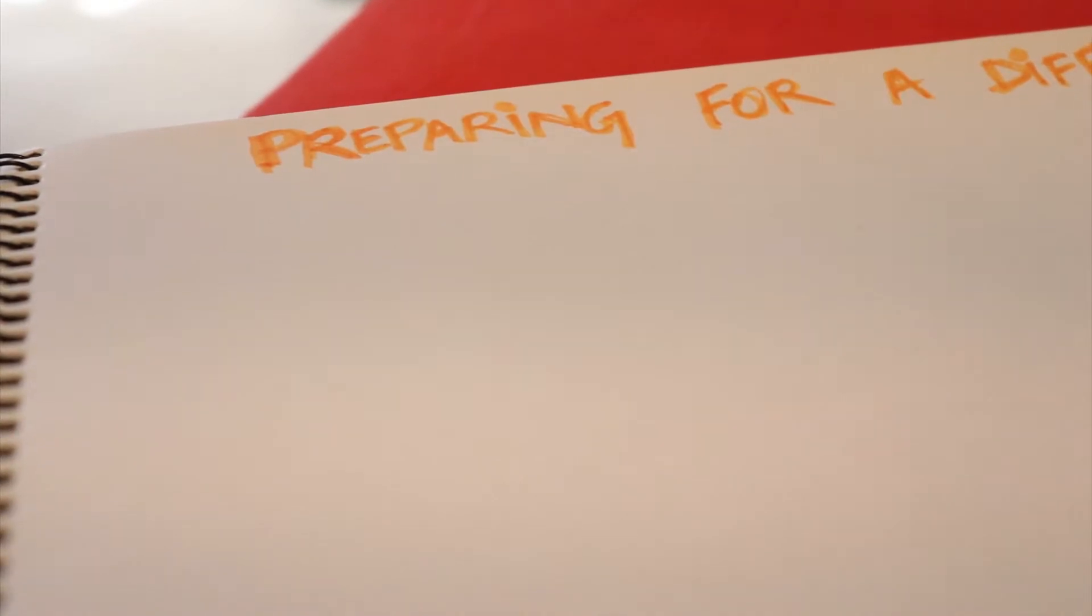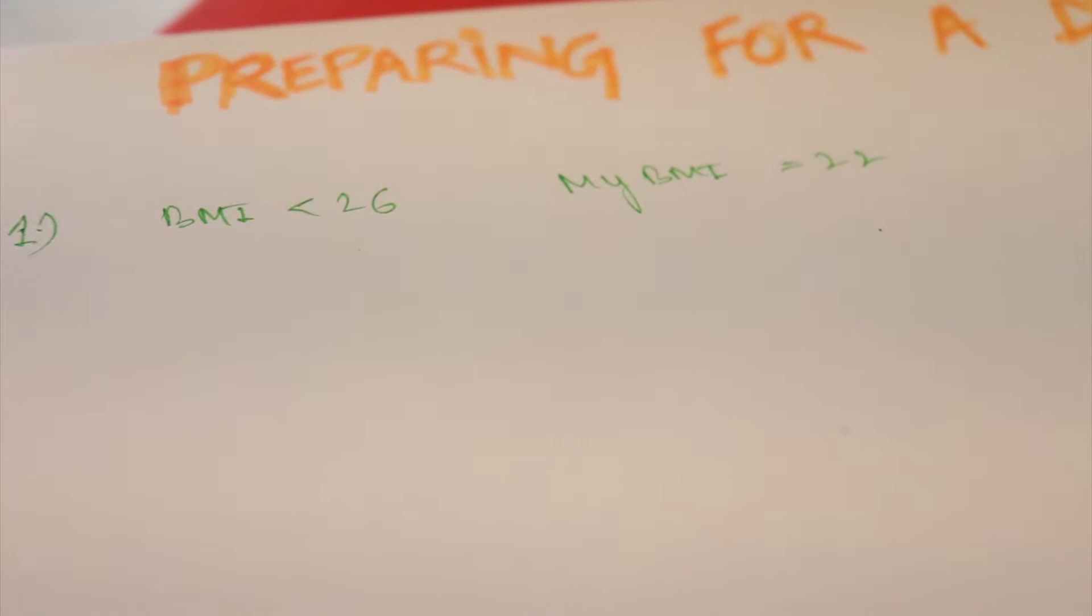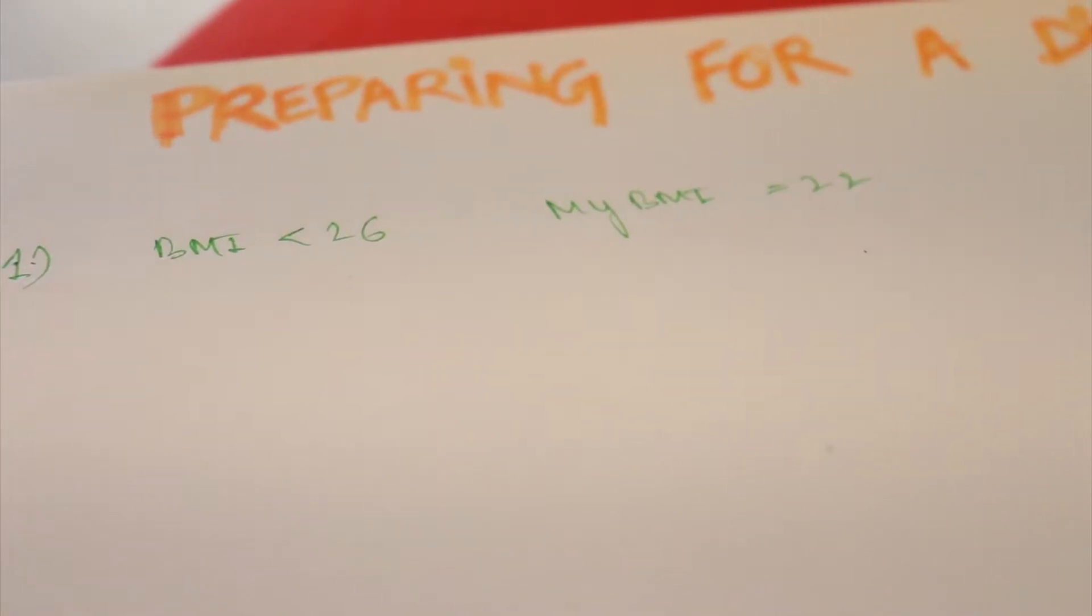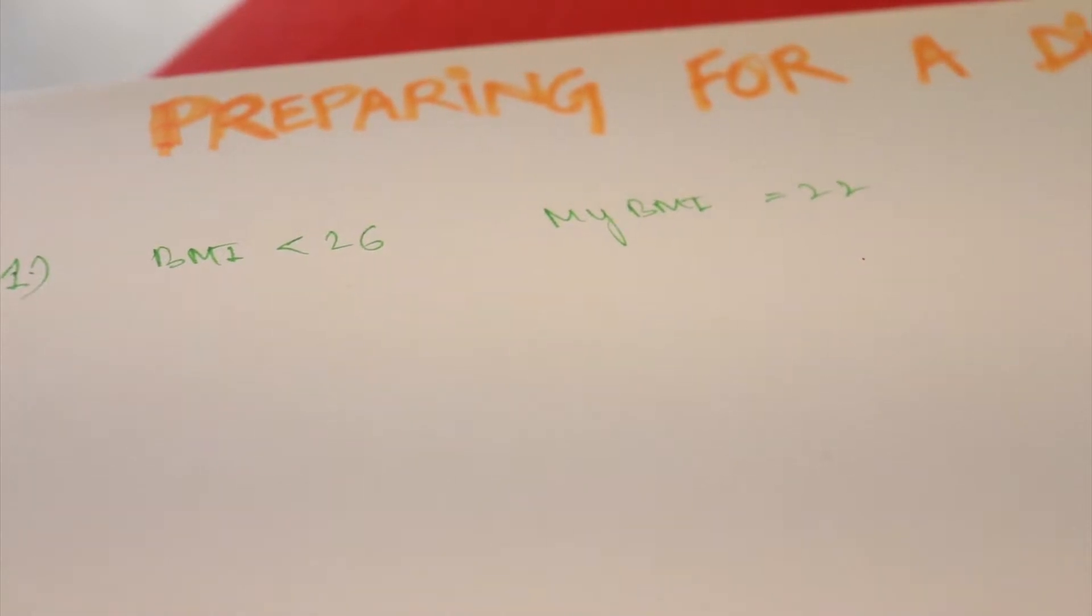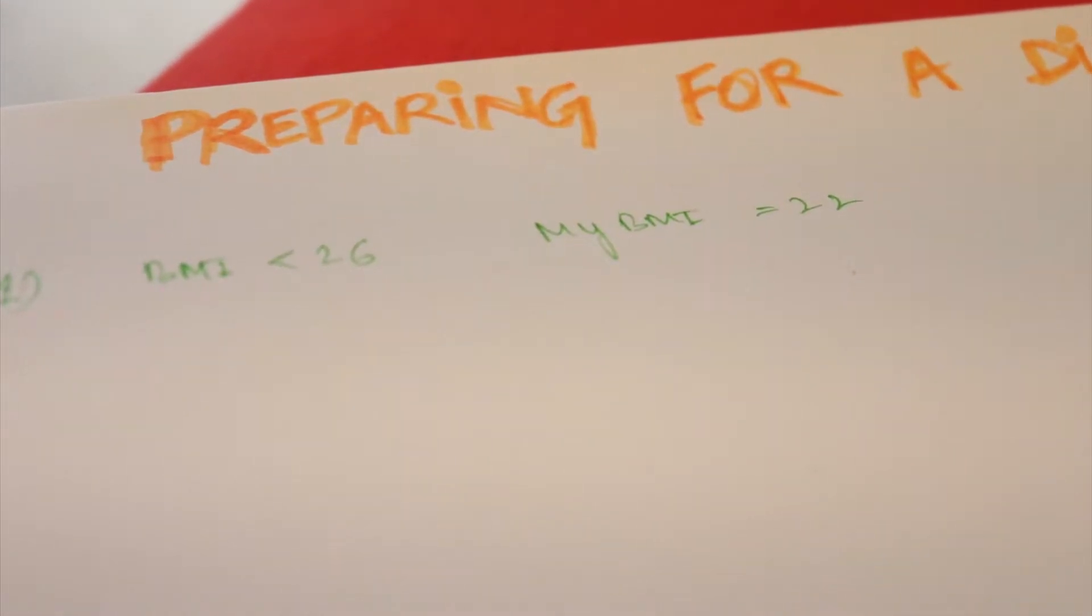First requirement: your BMI should be under 26. If you're new and don't know what BMI is, just Google it - there's also a BMI calculator built into Google search. BMI should be less than 26. My BMI is 22, which is perfectly fine. Your BMI should be between 18.5 to 25 - not beyond 25, that means you're unfit to track. If you have a BMI under 18.5, you can go for tracks but there's still some problem there.